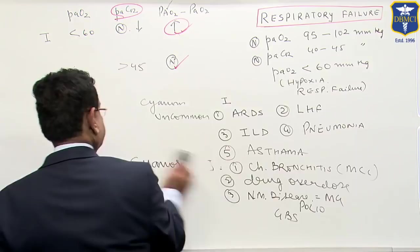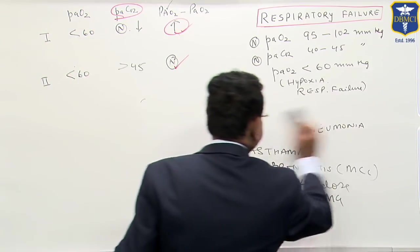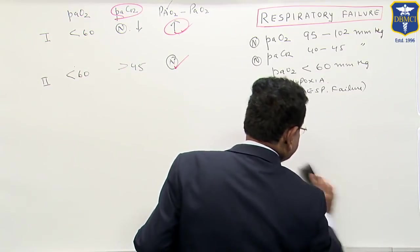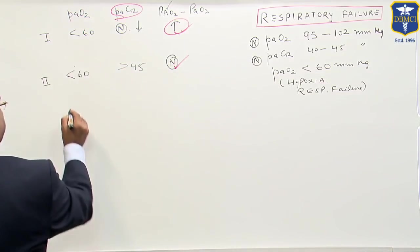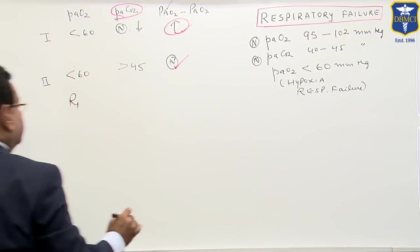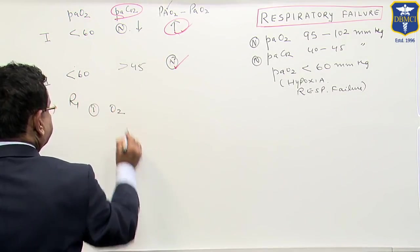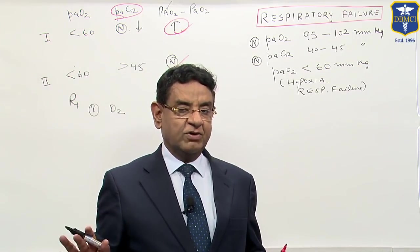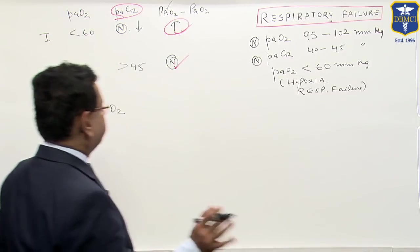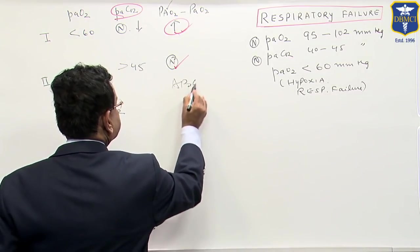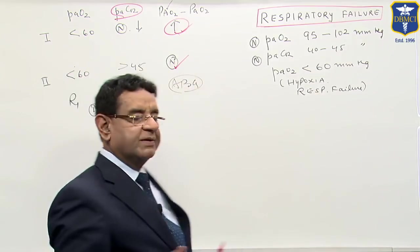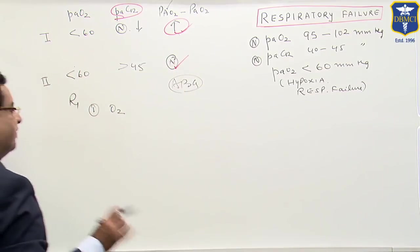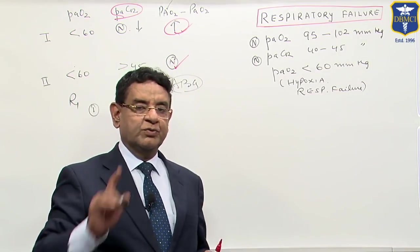Well, we have how to treat a case of type 1 failure and type 2 failure. Treatment: first is you give oxygen therapy, whether it is type 1 or type 2. First give oxygen. Of course, the best initial test will always be ABG. Then only we can decide whether type 1 or type 2. Once you have done ABG, then you start treating. The first thing is oxygen to be given first.